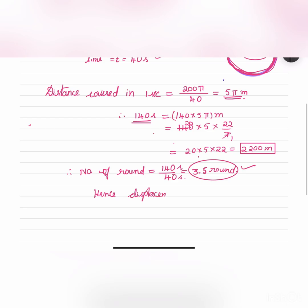Displacement of athlete will be equal to 200 meters. So 3.5 rounds means the displacement will be equal to 200 meters.